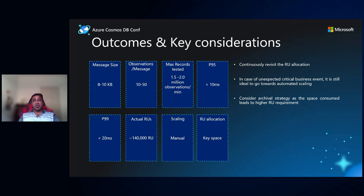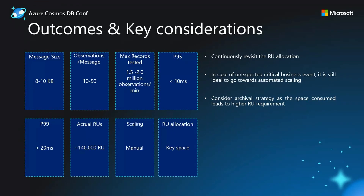Cosmos also allocates RUs based not just on consumption but also on the underlying storage. What this means is if your database has stored more and more data, the amount of RUs you need to allocate will be higher. To handle that, you would want to have an archival strategy — if historic data is not really required in the primary store, you would want to keep it in some other sort of storage. In our case, we stored historic data in block storage and used it as and when required.